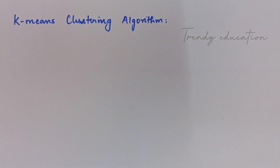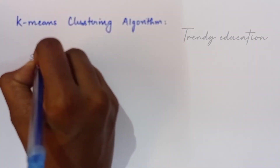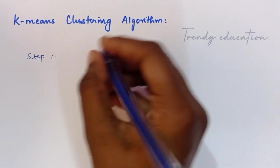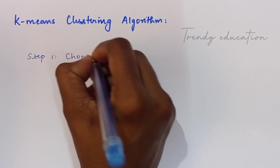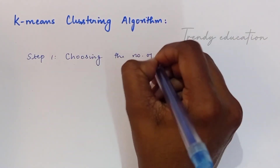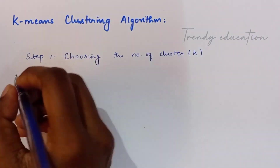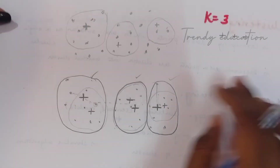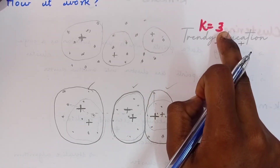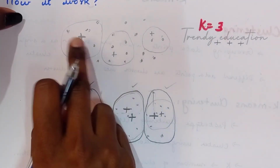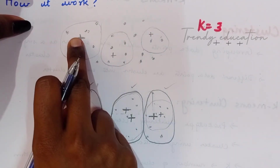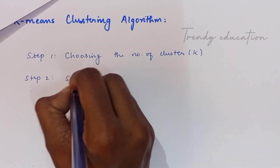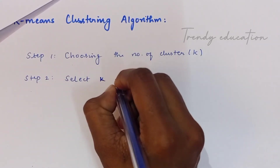Now let's write the algorithm for k-means clustering. Step 1: Choose the number of clusters k. For example, I'll assume k equals 3. Step 2: Randomly select k centroid points from the data.